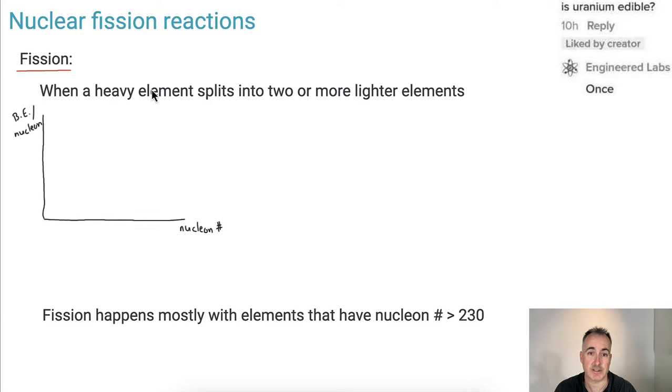Fission is when a heavy element splits into two or more lighter elements. If we look at this binding energy per nucleon curve, fission is going to happen over here. This is when fusion is energetically favorable, whereas fission is more likely here. That's because you want to go up in this curve. That explains why fission is going to happen mostly when elements have a nucleon number greater than 230.